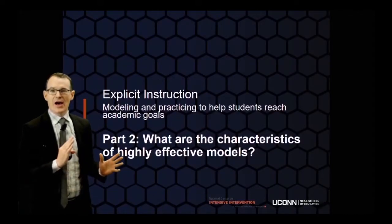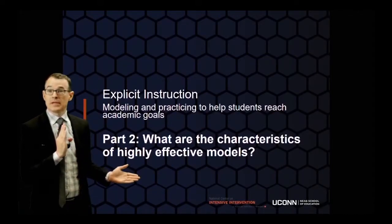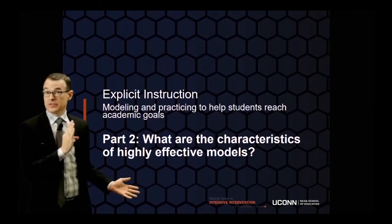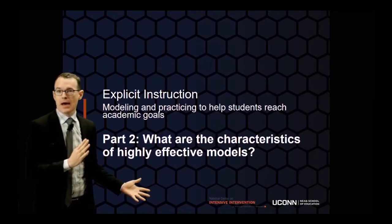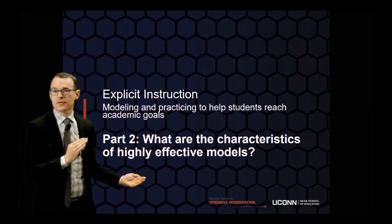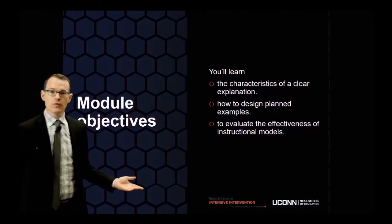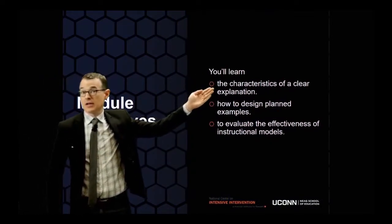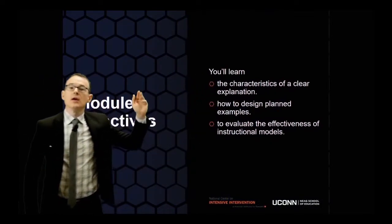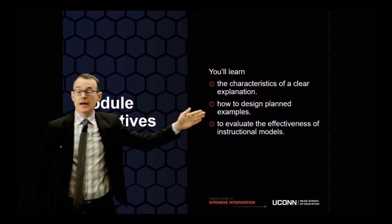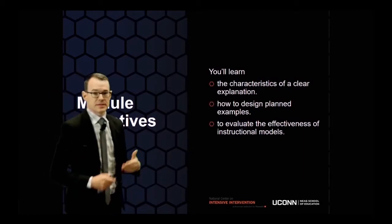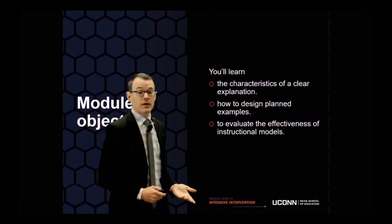We've now talked about what it means to have an objective for explicit instruction. Now let's talk about the modeling part, the very first part of explicit instruction. The goal of this part of the module is: one, to talk about the characteristics of a clear explanation; two, to talk about how to design planned examples that go with the explanation; and three, how to look at instructional models and decide how effective they are.